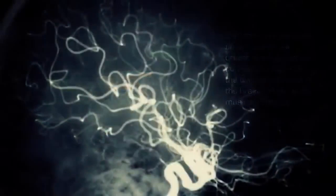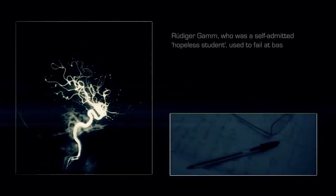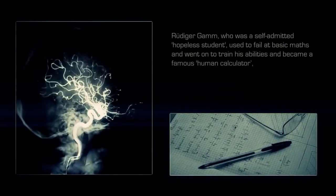Virtually any sort of talent or skill can be created through training. Rüdiger Gamm, who was a self-admitted hopeless student, used to fail at basic math, and went on to train his abilities and became a famous human calculator, capable of performing extremely complex mathematics.